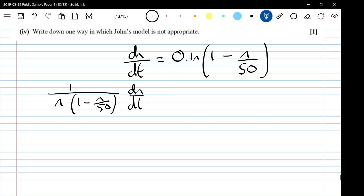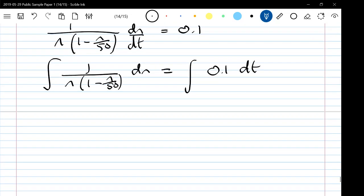dn/dt is 0.1 and then if we integrate we've got 1 over n times 1 minus n over 50 dn is the integral of 0.1 dt. Now it's partial fractions so we're going to have to do something with this. Let's work on that separately.